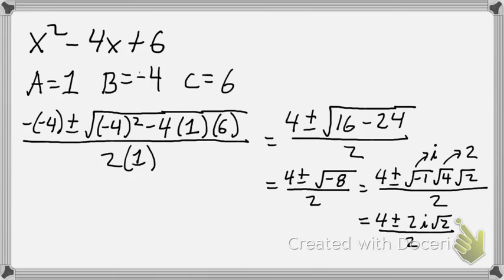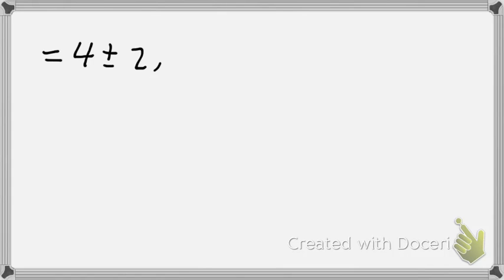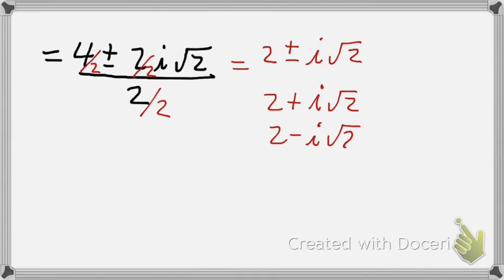I have to be careful how I simplify. Oftentimes, students want to take the 2 and divide it into 2 in the radical. I can't do that. But what I can do is, if it's outside the radical, all these terms can be legitimately divided by 2. So I've got a simplification of 2 plus or minus imaginary i times the square root of 2. So that means I have two answers for x. If I plug 2 plus i square root of 2 into the original function, it will equal 0. If I plug in 2 minus i root 2 into the original function, it will equal 0. So these are my x coordinates that will give me y equals 0.